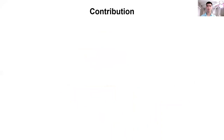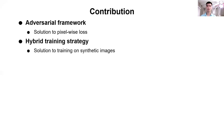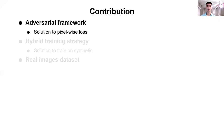In our work, we make several contributions to address these limitations. Specifically, we propose an adversarial framework to increase the flexibility of the network and produce visually pleasing results. To resolve the data distribution gap, we propose a hybrid training strategy to train our network on both synthetic and real images. Finally, we provide a real dataset. Now I will discuss each contribution in detail, starting from our adversarial framework.